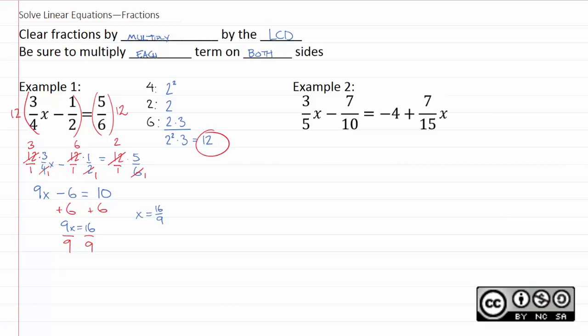The second problem works the exact same way. We're just going to find the LCD of all three denominators. We find the simplest or smallest number that is divisible by five, ten, and fifteen.